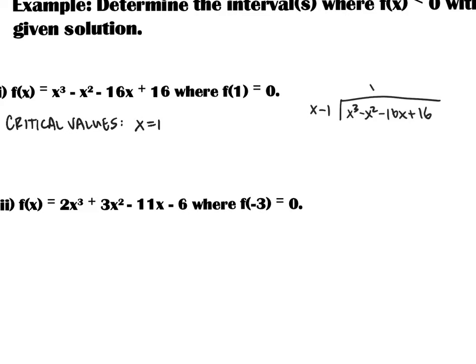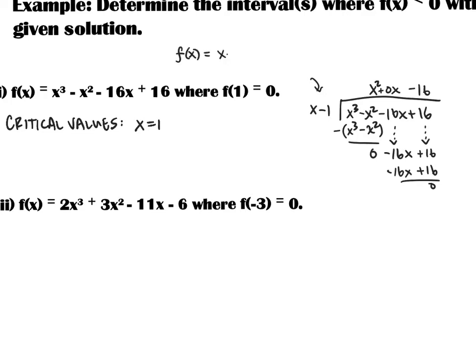So x times x² gives me x³. I multiply through — looks like I'm going to have pretty nice cancellation here. x times negative one is negative x², so I get zero. I drop down negative 16x, and because I have two terms in my divisor I also drop down the 16. I multiply by negative 16 and place that here. I multiply through and it looks like I'm going to get a remainder of zero, which is exactly what I want. Therefore this polynomial f(x) can be written as (x − 1)(x + 4)(x − 4).